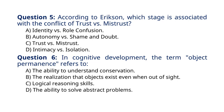Question 6. In cognitive development, the term object permanence refers to: A. The ability to understand conservation. B. The realization that objects exist even when out of sight. C. Logical reasoning skills. D. The ability to solve abstract problems.